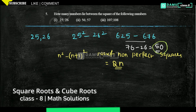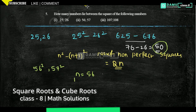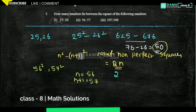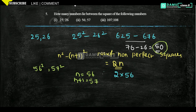Let's take 56² and 57². Here n equals 56 and n+1 equals 57. Using the formula 2n: 2 into 56 gives 112 numbers between them.